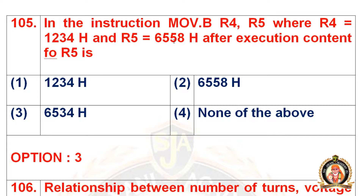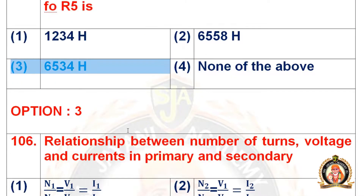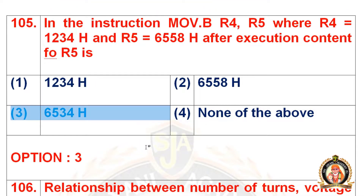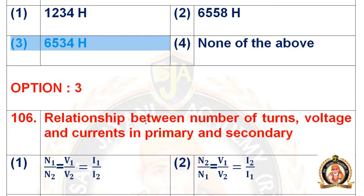Question 105: In the instruction MOV.B R4, R5 where R4 = 1234H and R5 = 6558H, after execution the content of R5 is. The options are 1234H, 6558H, 6534H, and none of the above. The right option is the third option, that is 6534H.